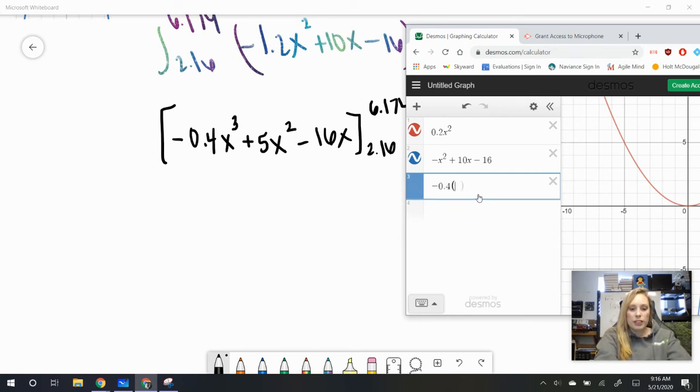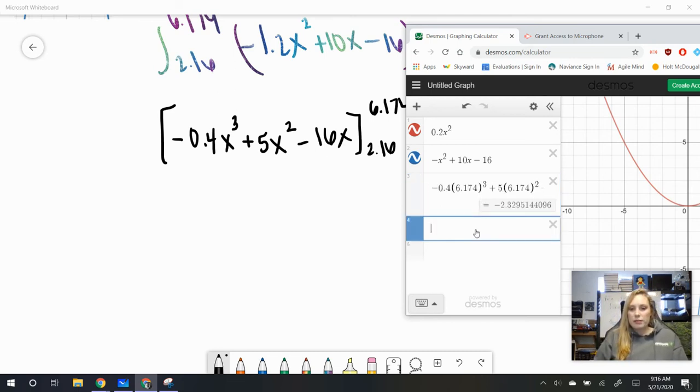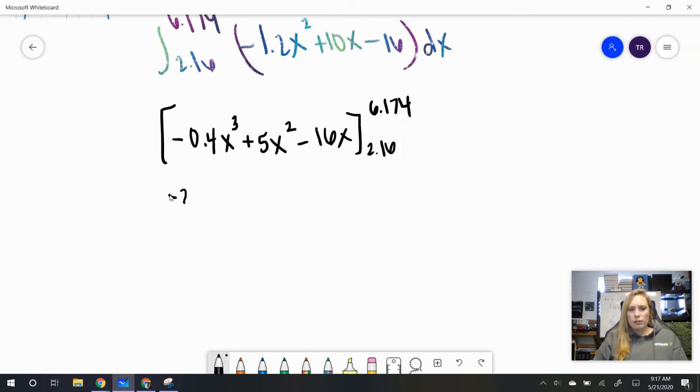So, let's say we have negative 0.4, our upper bound is 6.174, and that is to the third power, plus 5 times 6.174, and that is to the second power, minus 16 times 6.174. So, the first piece of this is going to be negative 2.330, and then we'll subtract our lower bound.